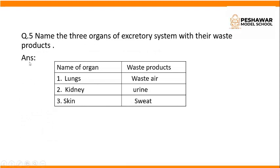Question number 5: Name the 3 organs of the excretory system with their waste products. The names of organs and their waste products are: from lungs, we excrete waste air; from kidneys, we excrete urine; and from skin, sweat is excreted.